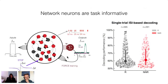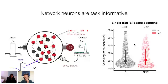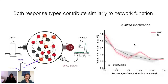Now that we can generate these different response types, we asked whether network units encoded task information just as observed in vivo. Using the exact same single-trial ISI-based nonparametric Bayesian decoder, we found that both responsive and nominally non-responsive units encode task information. Decoding performance for both groups is comparable to what we found in vivo. Decoding performance is evaluated using 10-fold cross-validation and is considered significant relative to a control where observed ISIs are shuffled across groups.